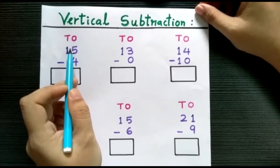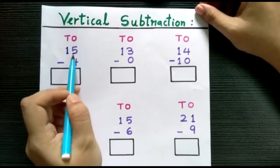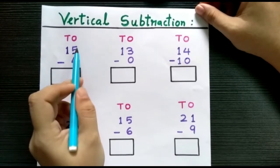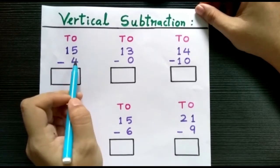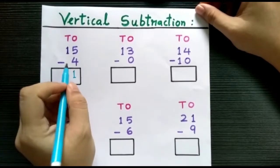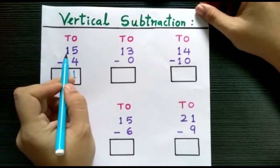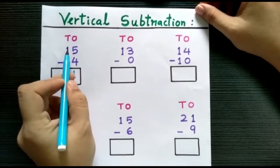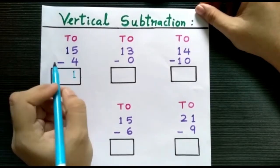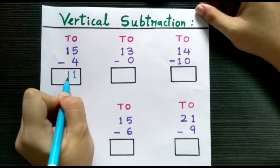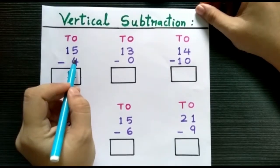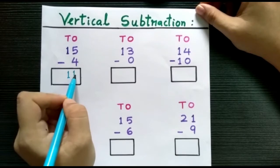In the ones place we have 5 minus 4, so 5 minus 4 is 1. And in the tens place we have only one number, so it will remain the same. So 15 minus 4 is 11.